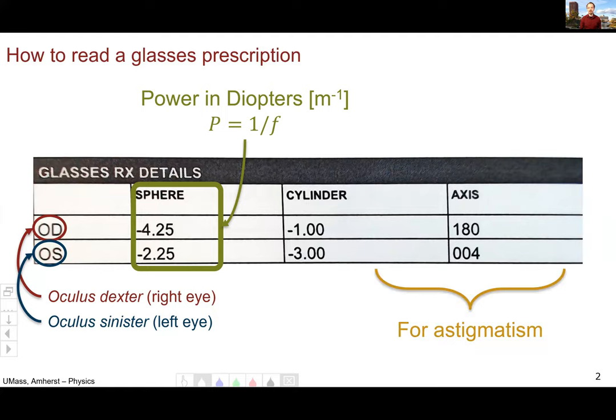And then these other two columns are for astigmatism. So the first column here is cylinder, and this represents the added power needed to fix the astigmatism.